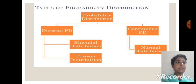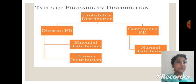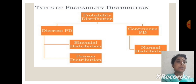The type of probability distribution is: there are two types of probability distribution — discrete probability distribution and continuous probability distribution. We have two types of discrete probability distribution: first is binomial distribution and second is Poisson distribution.